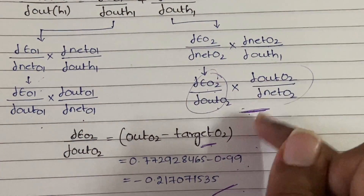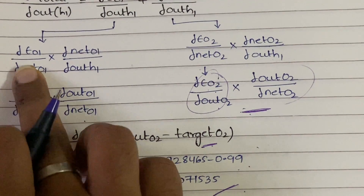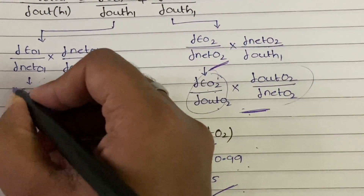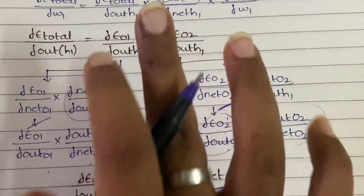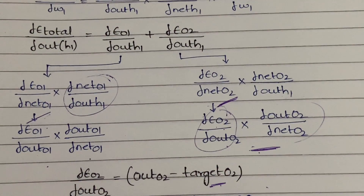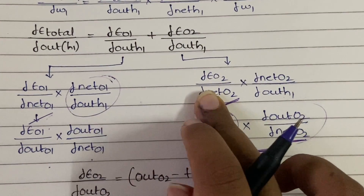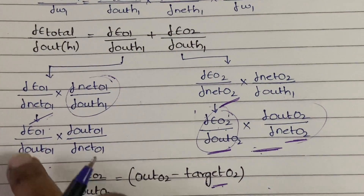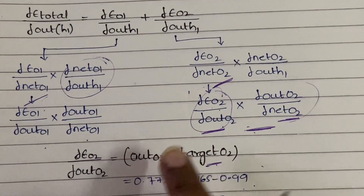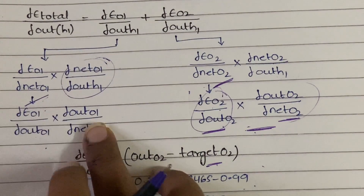You now have both sub-terms for the o2 branch and multiply them to get dE_o2/d(net_o2). Apply the same formulas to the o1 branch — simply replace o2 with o1 everywhere — to get dE_o1/d(net_o1). After finding both results, multiply each by the corresponding d(net)/d(out_h1) term and then add them together to get the full first term dE_total/d(out_h1).